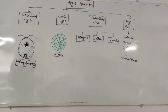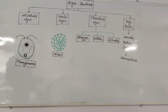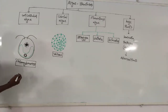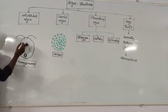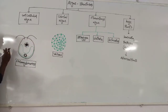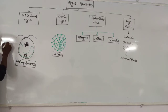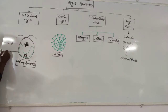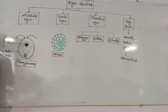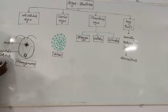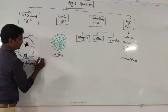The very first type is unicellular algae. Chlamydomonas is the best example. This is a single cell. The structure shows a nucleus and a chloroplast structure. The shape of the chloroplast is cup-shaped.